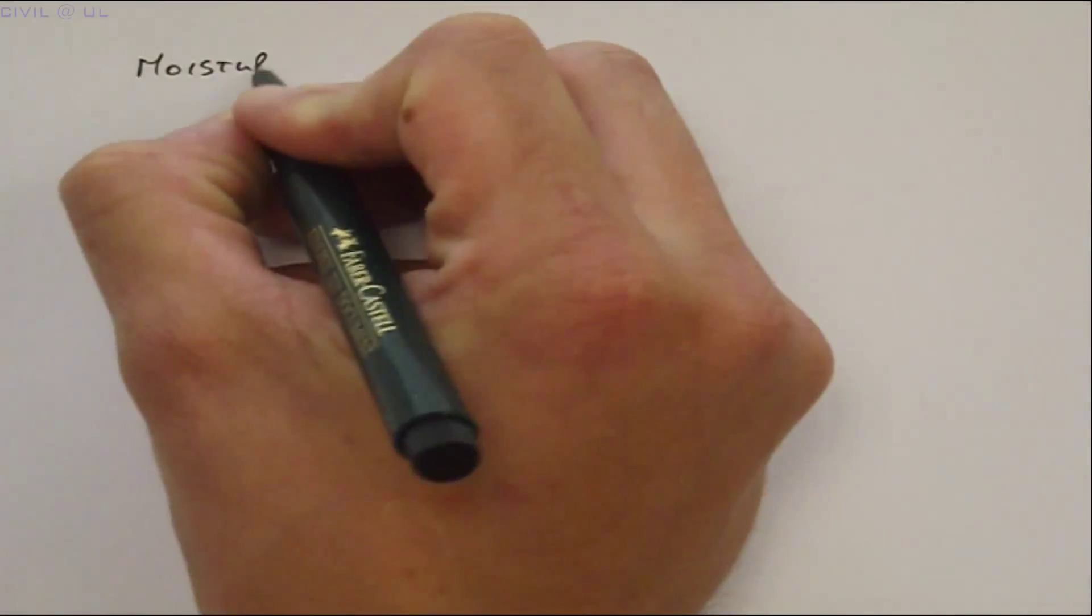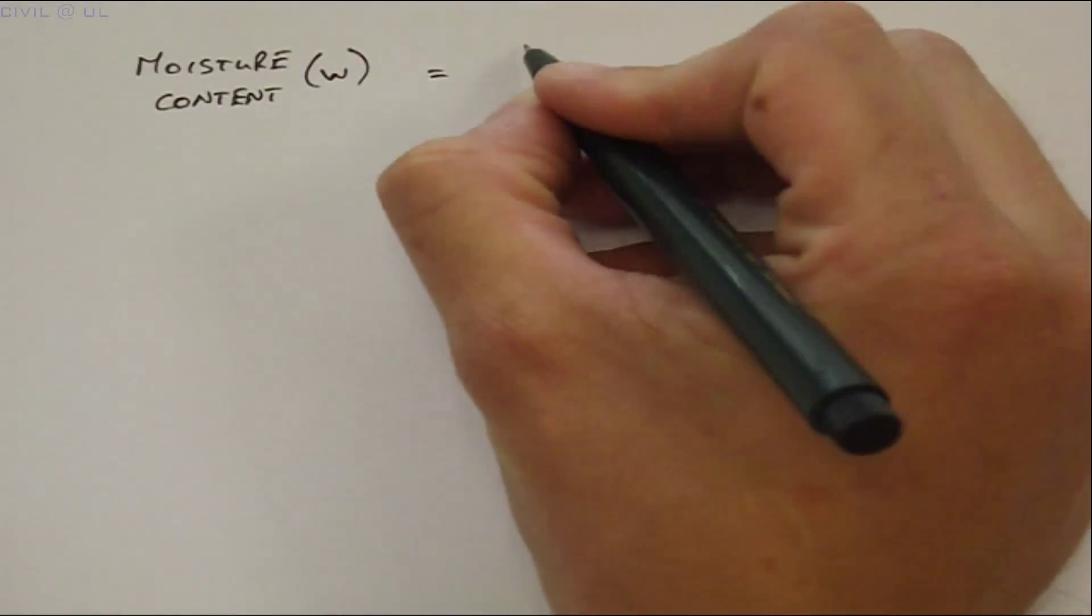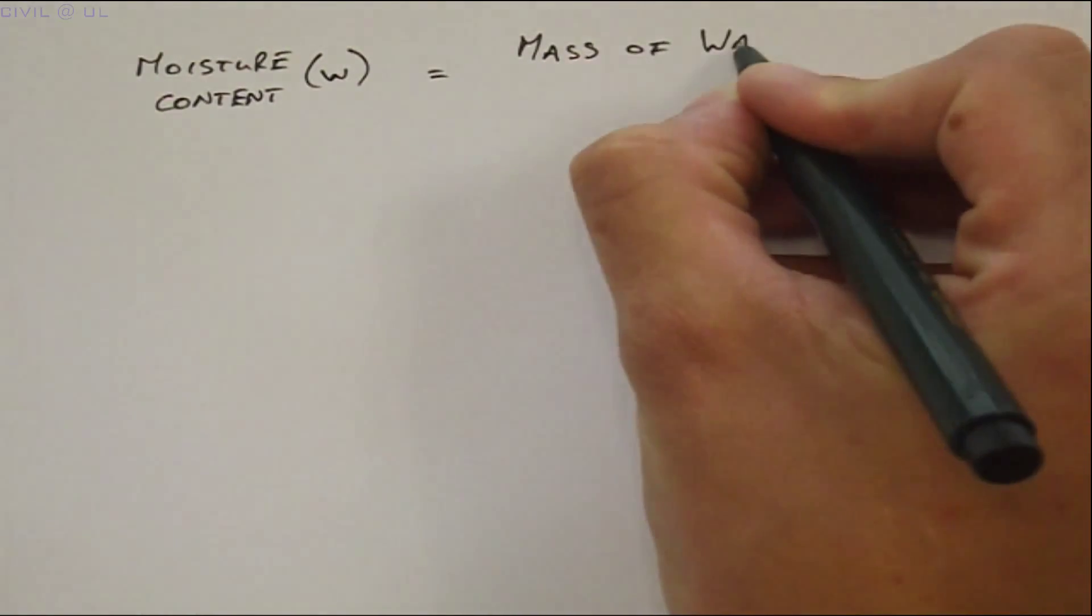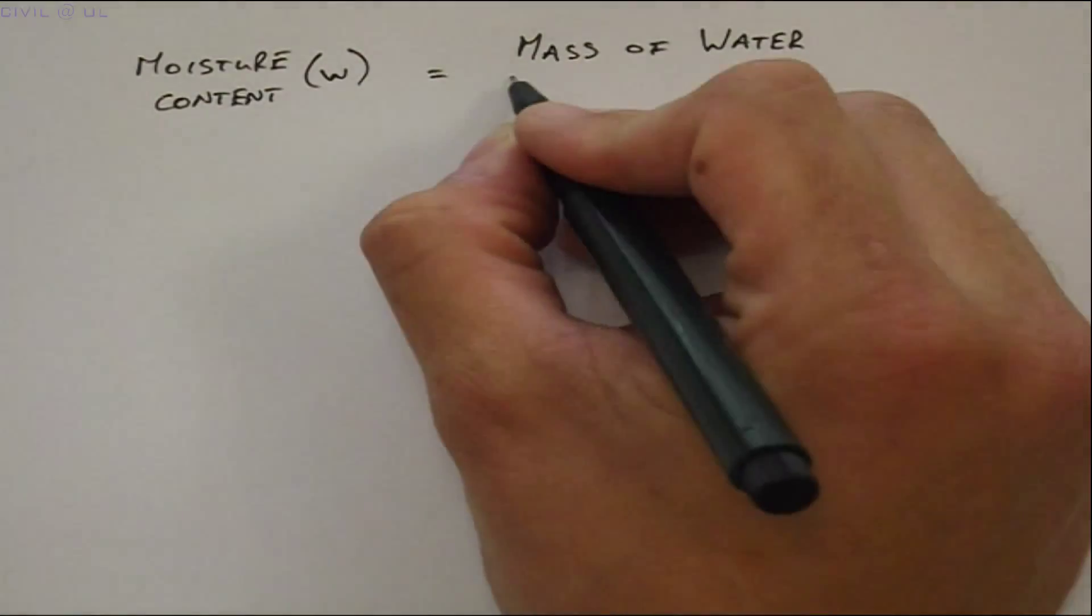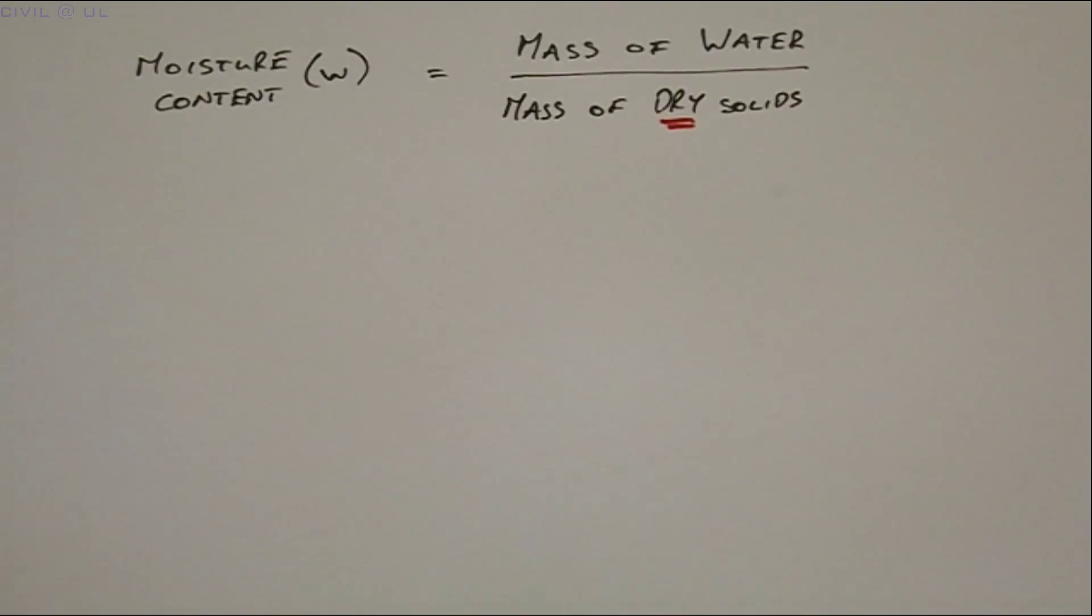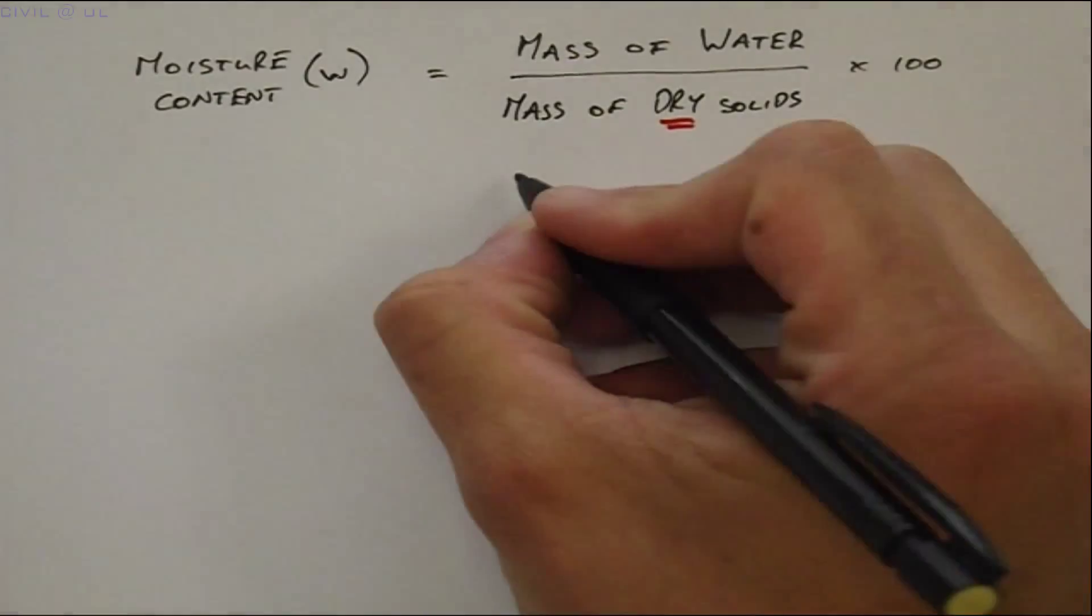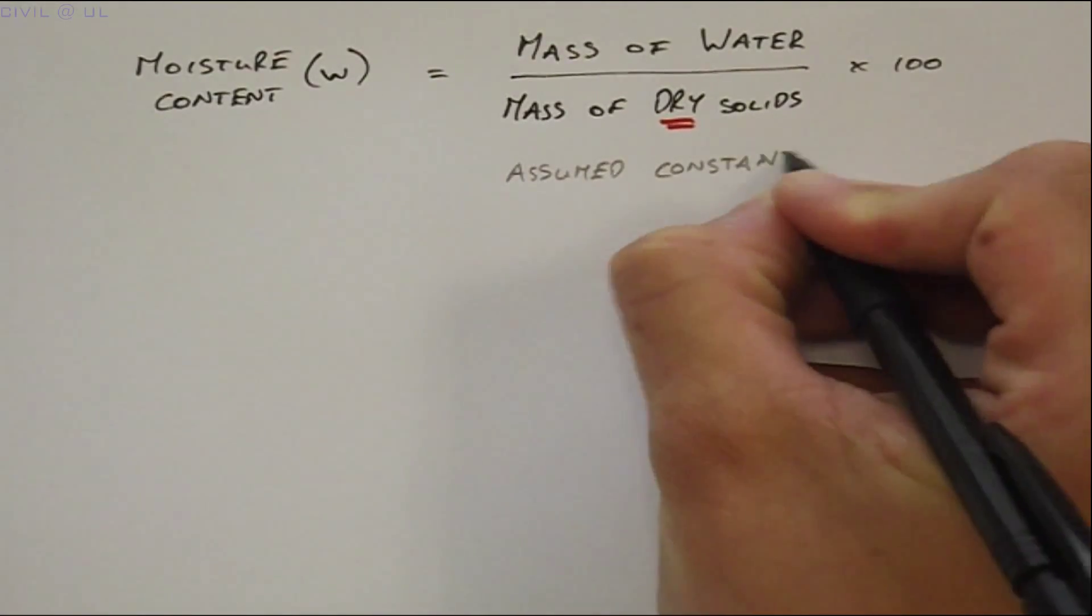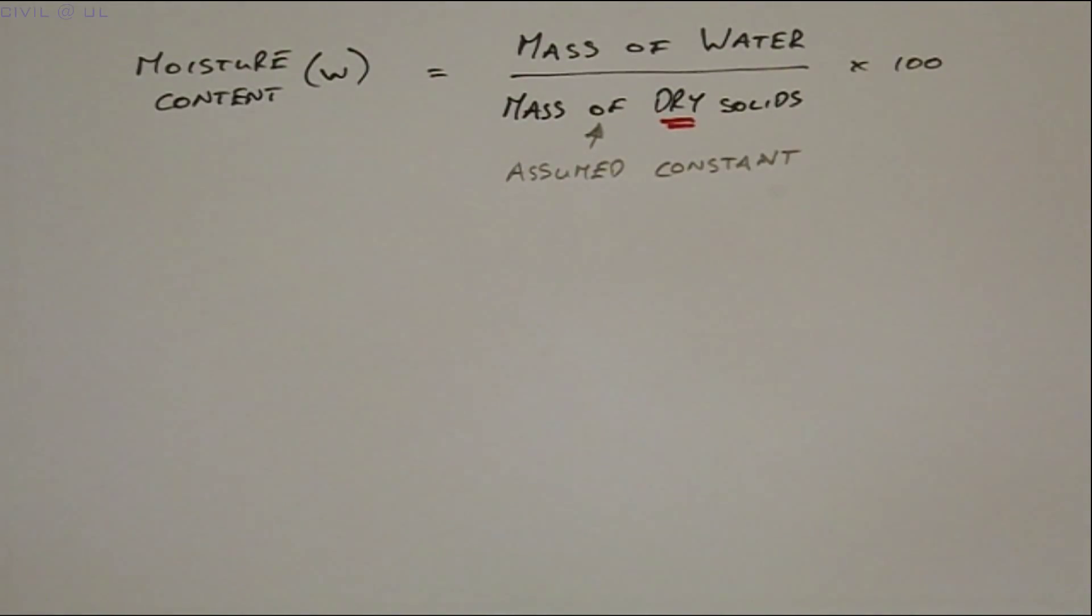Let's start with the moisture content W. Moisture content is equal to the mass of water in the soil divided by the mass of dry solids, and this is normally expressed as a percentage. We use the mass of dry solids as it is assumed to remain constant, while the volume of voids may change.